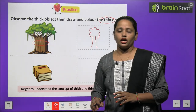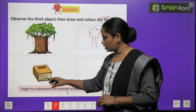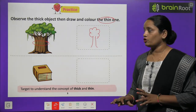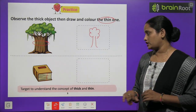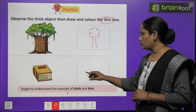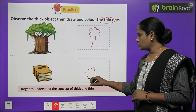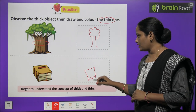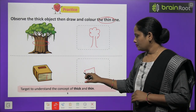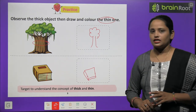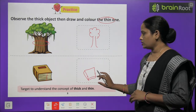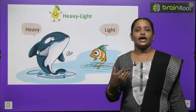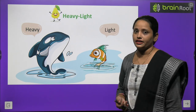Yahaan pe ek book hai — dekho kitni moti book hai, kitne saare pages hain. Toh bohot saare pages hone ki wajah se, book kaafi zyada thick ho chuki hai. Ab humein ek aur book banani hai jo patli honi chahiye. Toh humne thode se page wali book yahaan pe bana di hai. So like this you have to make the book — this is thin and this is thick. Next is heavy and light.